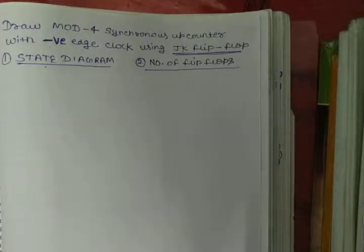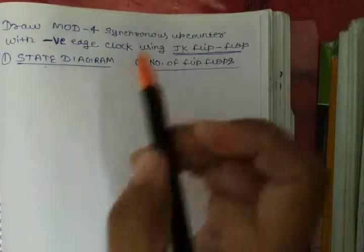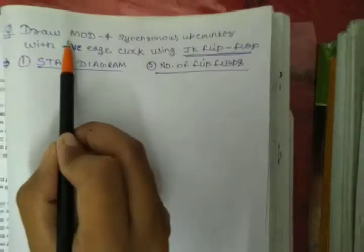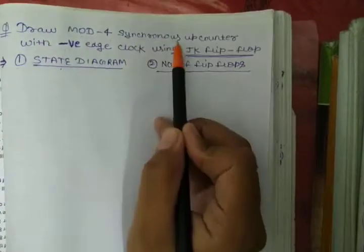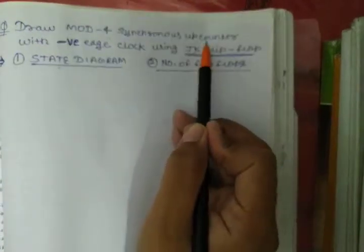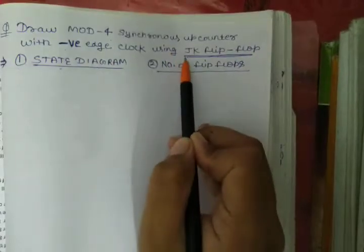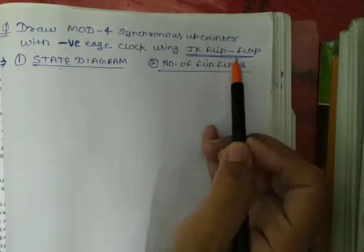In this video I will explain how you can construct an up counter with negative edge clock. The flip-flop we are using here is JK flip-flop. We have to construct a mod 4 synchronous up counter using negative edge clock and JK flip-flop.